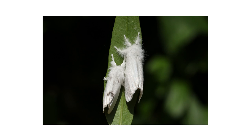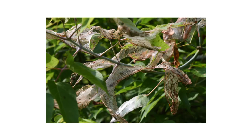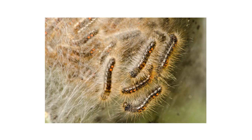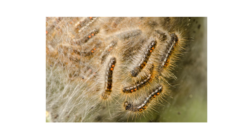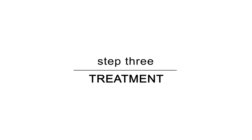Adult moths will emerge in July and can be seen until August as they mate and lay eggs. During the winter, caterpillars will create tent-like webs wrapped around leaves and branches. You'll know these are browntail moth caterpillars and not tent caterpillars, since tent caterpillars are active during the spring.